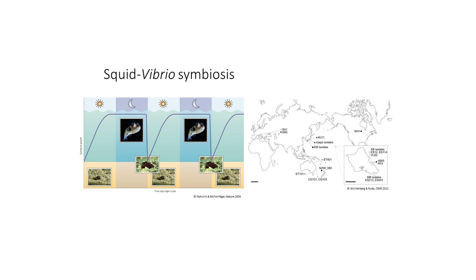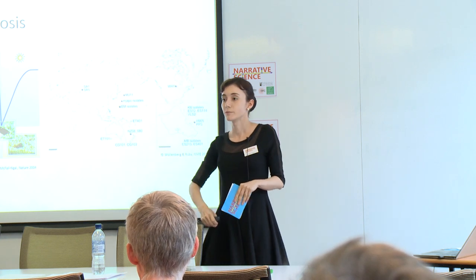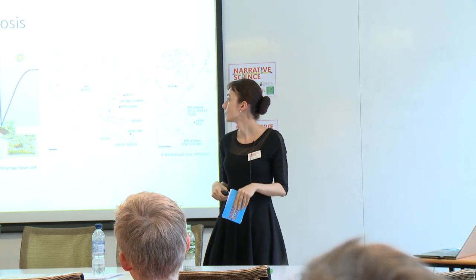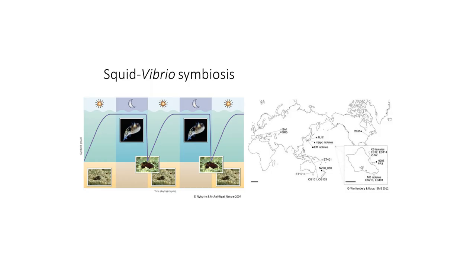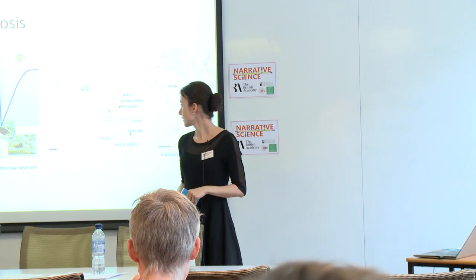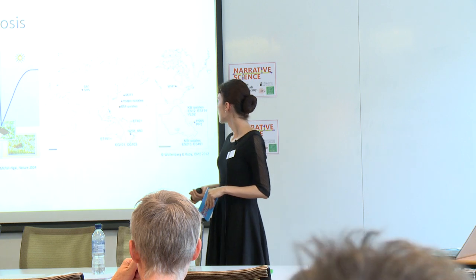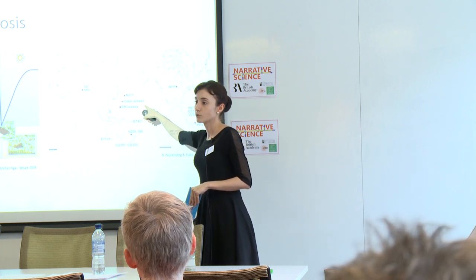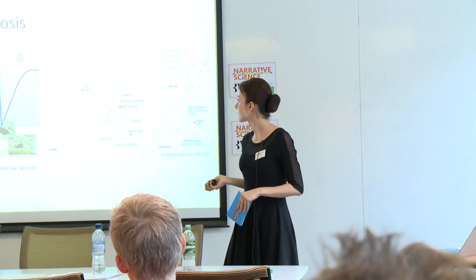After the mutualistic association is established, there is a daily release cycle back into the environment every day. After the function of the bioluminescence is finished with sunrise, the squid releases 90 to 95 percent of the bacteria back into the ocean, and the remaining bacteria in the light organ exponentially grows until the next night. This daily release has a major impact on the distribution and abundance of this bacteria, which is found mainly in the coast of Hawaii.